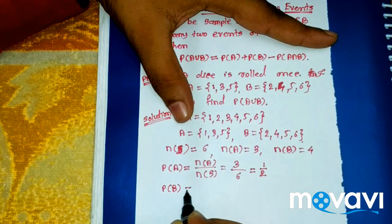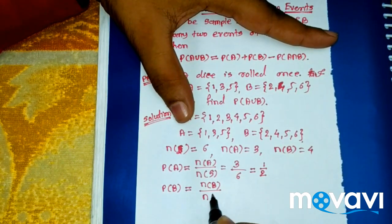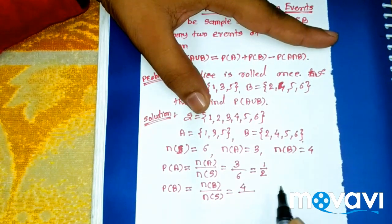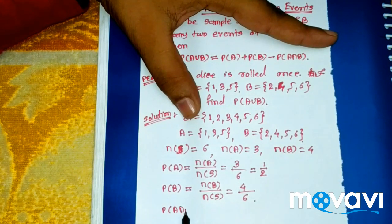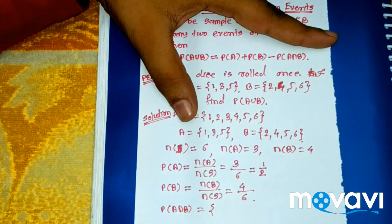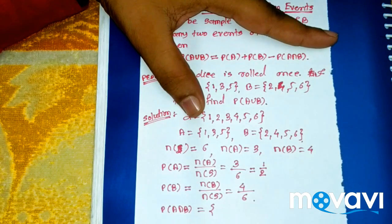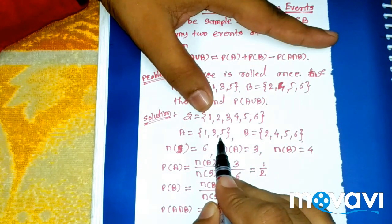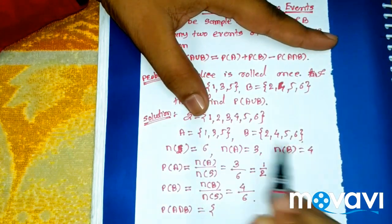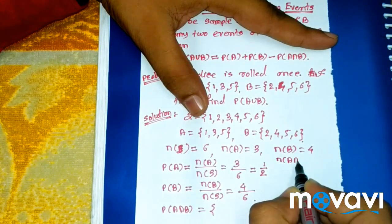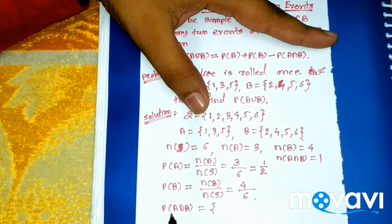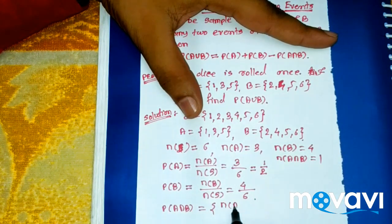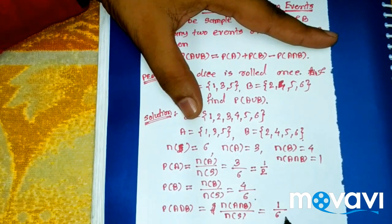Similarly, probability of B is n(B) upon n(S), so P(B) = 4/6. For P(A intersection B), A intersection B means those points present in both A and B. Here only 5 is present in both sets. Therefore n(A intersection B) = 1, and P(A intersection B) = 1/6.